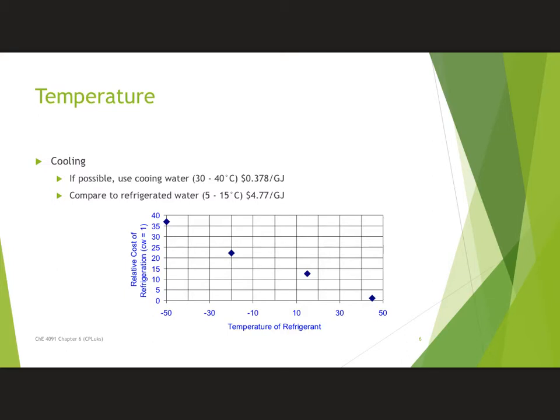For temperatures, if possible, we'd like to use cooling water to do our cooling. Cooling water generally operates between about 30 and 40 degrees C, and it's going to cost like 38 cents per gigajoule. If I have to go a little cooler and use refrigerated water—just above freezing—that's more like $5 a gigajoule. That's a huge price increase. And if I have to go to even colder temperatures, the price goes up significantly.